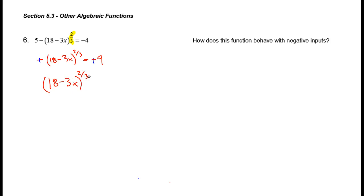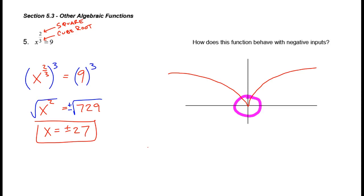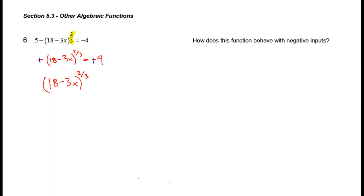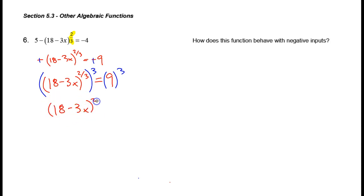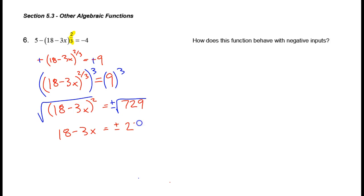I think we had a problem like this before. In fact, in the previous problem, we had x raised to the 2/3 power equals 9, and we said that equals plus or minus 27. So that means 18 minus 3x, once I deal with the 2/3 exponent — I'll repeat that work again. First, we'll cube both sides, giving me 18 minus 3x, the quantity now squared, equal to 729. Then we extract a square root from both sides, and this becomes plus or minus 729 on the right-hand side. The left-hand side is 18 minus 3x, and this equals positive or negative 27.